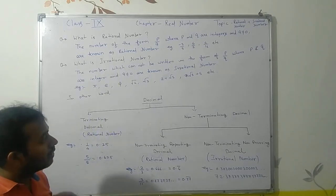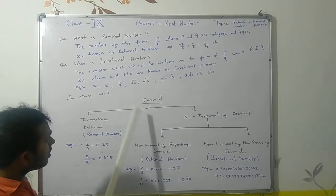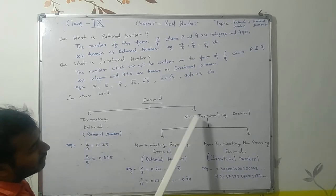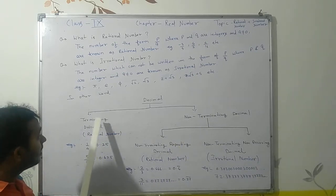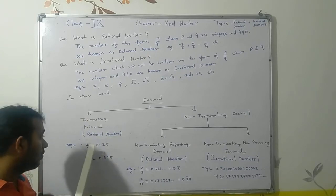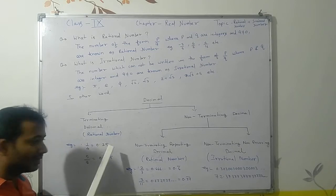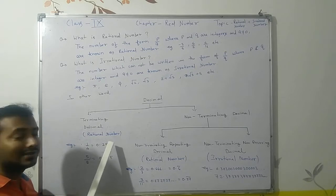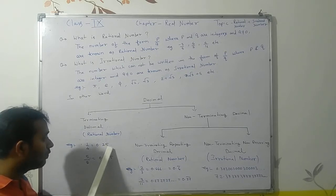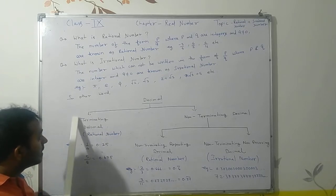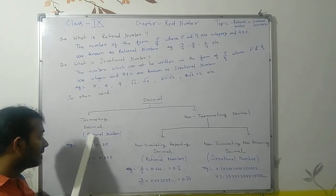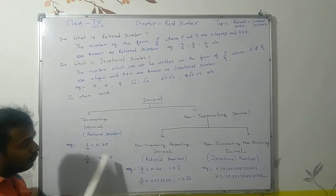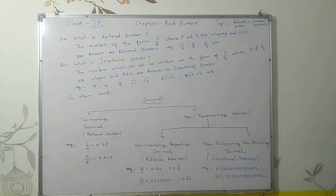In other words, we can define rational and irrational numbers using decimals. Decimals are divided into two categories: terminating decimal and non-terminating decimal. A terminating decimal is called a rational number. For example, 1/4 = 0.25 — it terminates, meaning it has an end with no further digits. This is a terminating decimal and therefore a rational number. Similarly, 5/8 = 0.625 is also a terminating decimal.